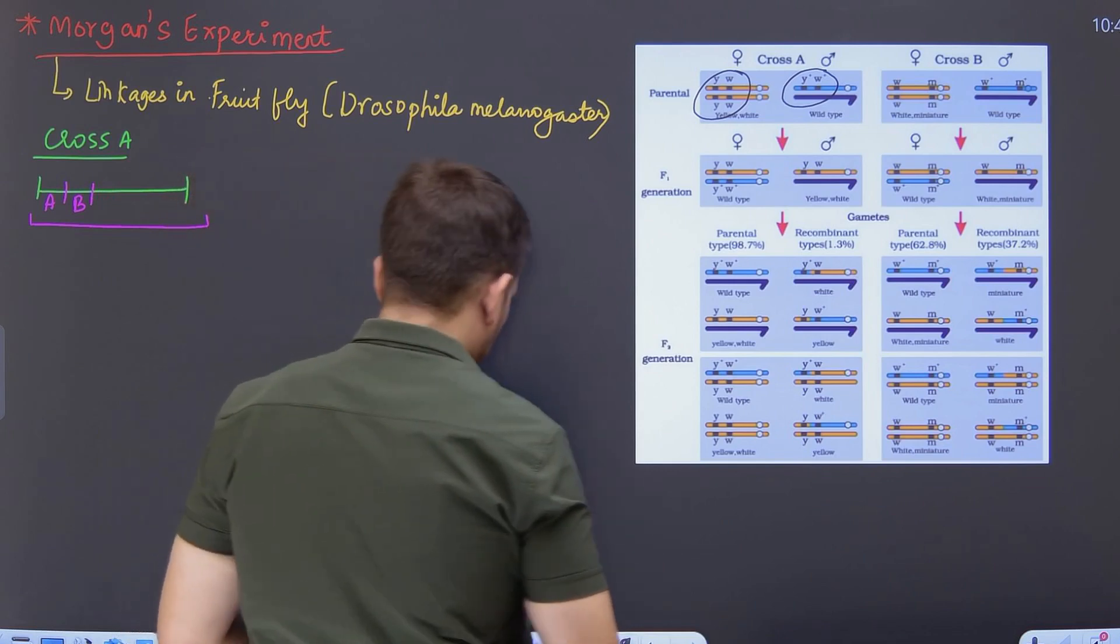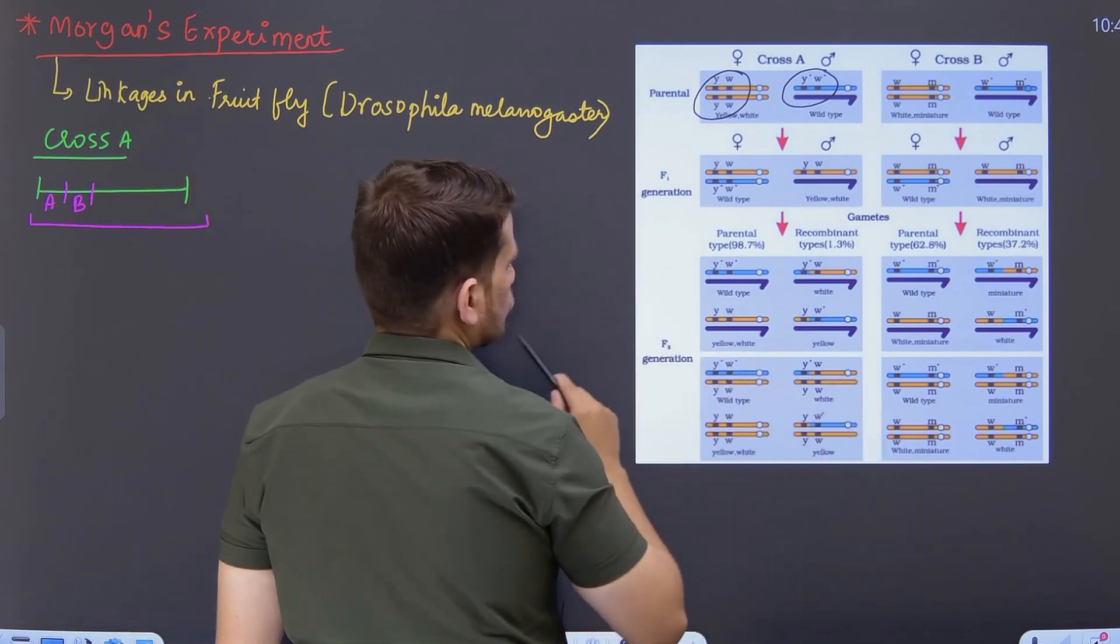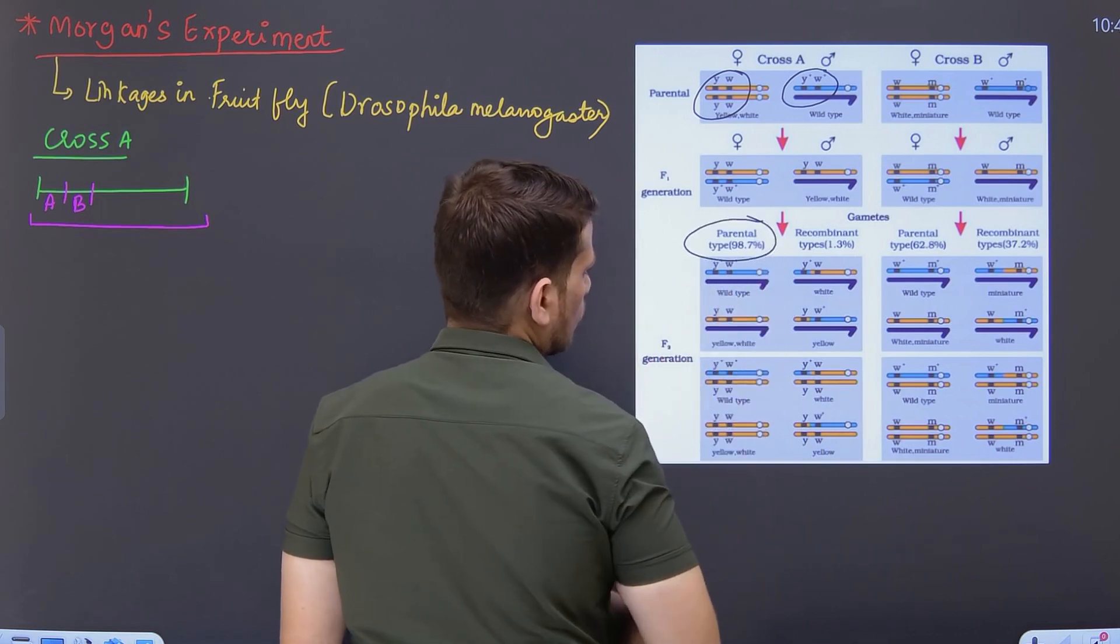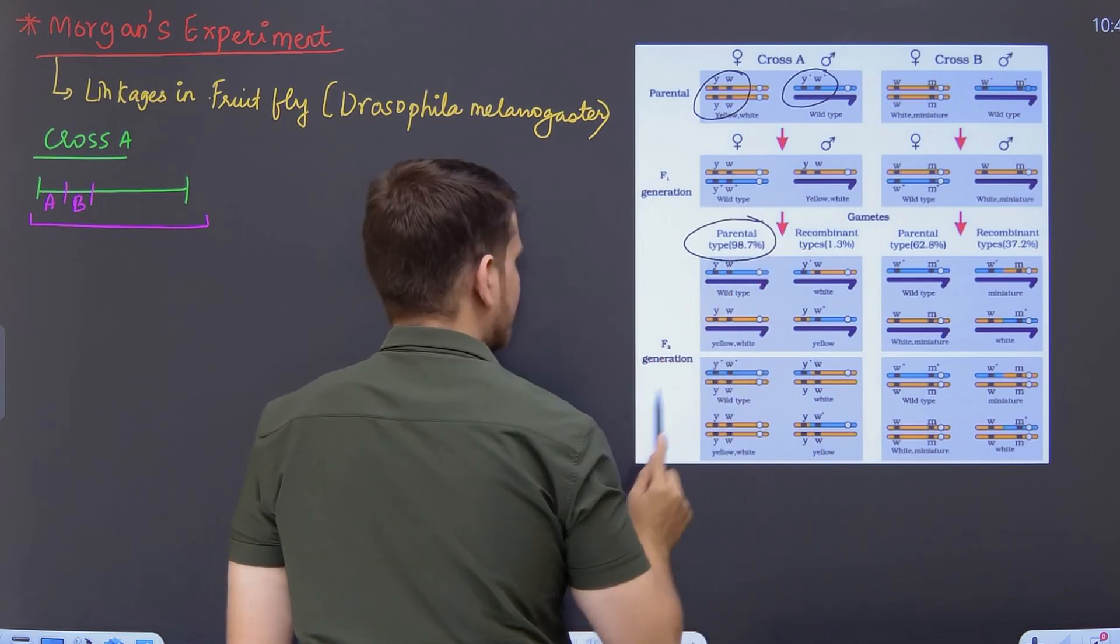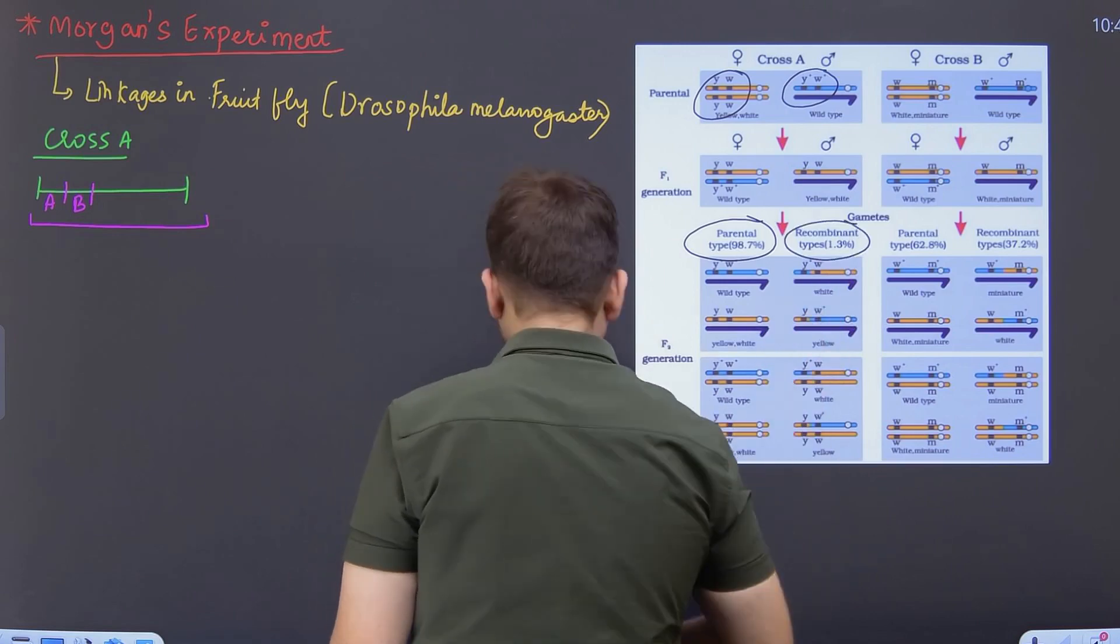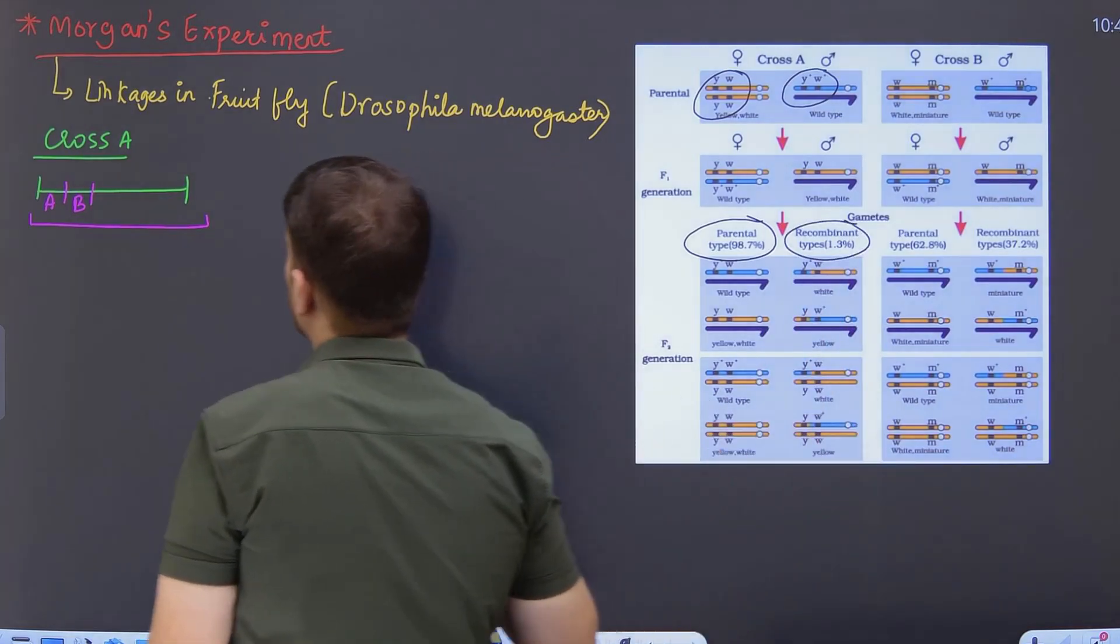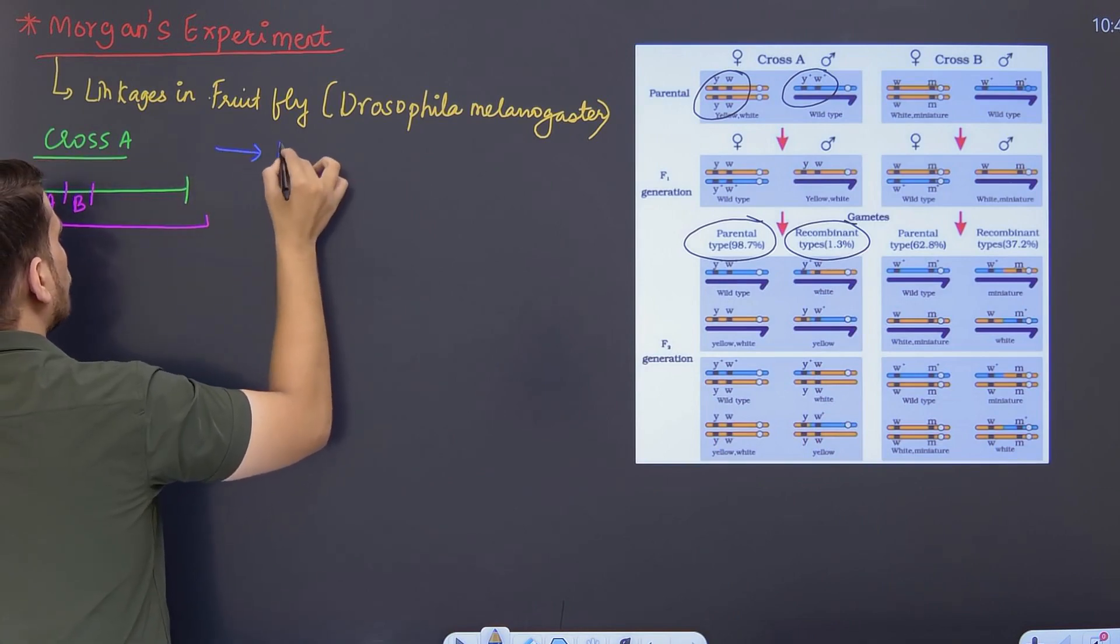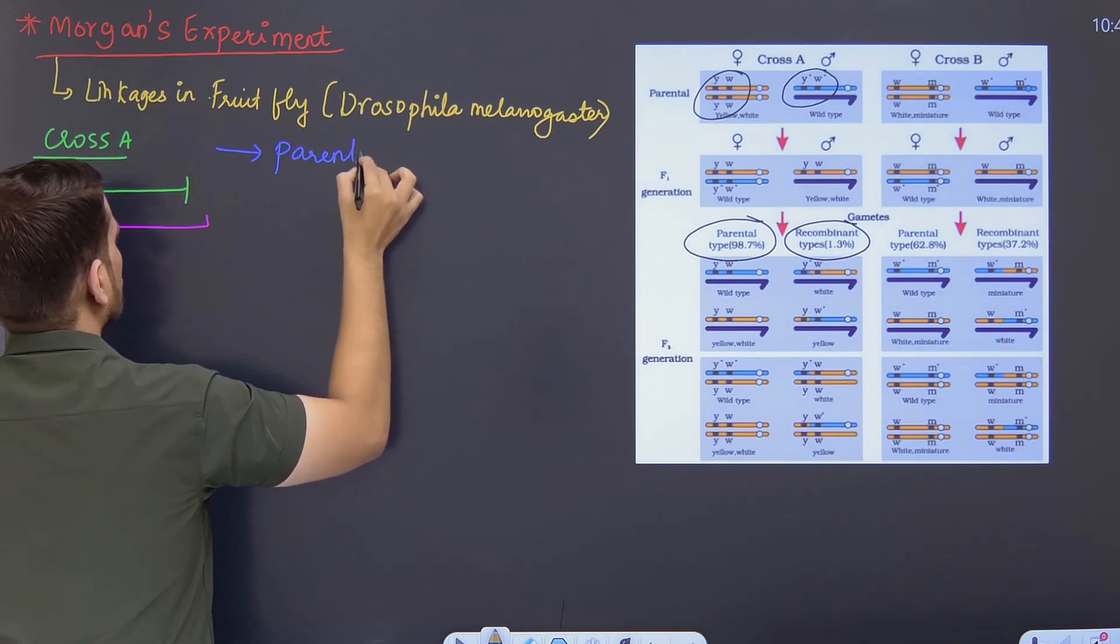So when we talk about the genes which are very closely associated, you can have a look here. The parental combination which was obtained was about 98.7%. And the recombinant was 1.3%. So when we talked about this kind of combination, you obtained here parental type.